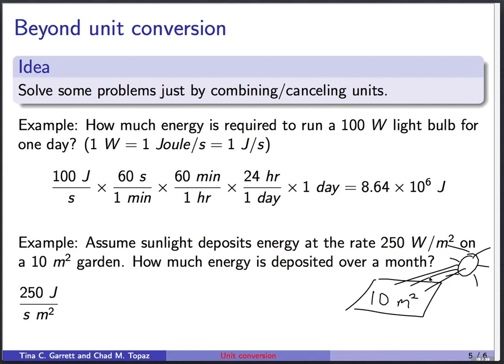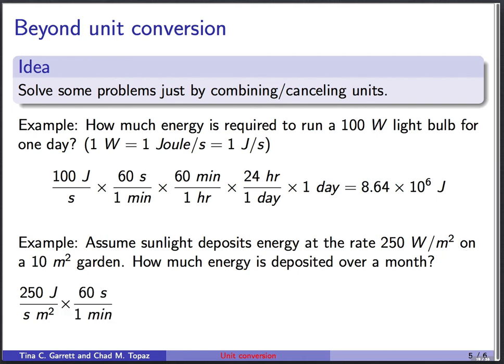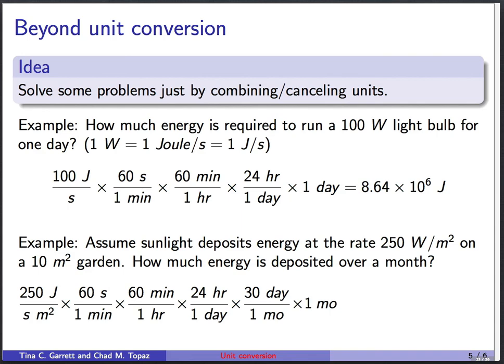So we start out with our 250 watts, that's 250 joules per second per meter squared. And we want to get to a value of joules, because joules are energy. So we're going to multiply by 60 seconds in a minute, 60 minutes in an hour, 24 hours in a day, 30 days in a month, and we're asking about a period of 1 month. So what does this do for us? Seconds will cancel, minutes will cancel, hours, days, and months.